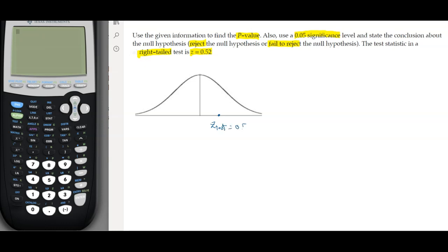It can be 0.52, this is going to be my z axis, and over here it can be zero. So now the vertical line going out of the z test value, you're going to make a right tail.